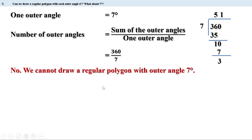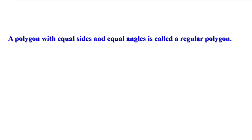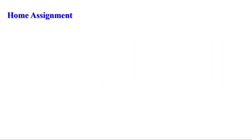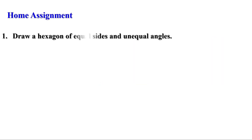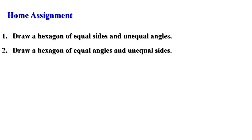Now let us recall what we have learned today. We discussed regular polygons — a polygon with equal sides and equal angles is called a regular polygon. There are two home assignments: draw a hexagon with equal sides and unequal angles, and draw a hexagon with equal angles and unequal sides. We shall discuss the remaining problems in the next video. Bye.